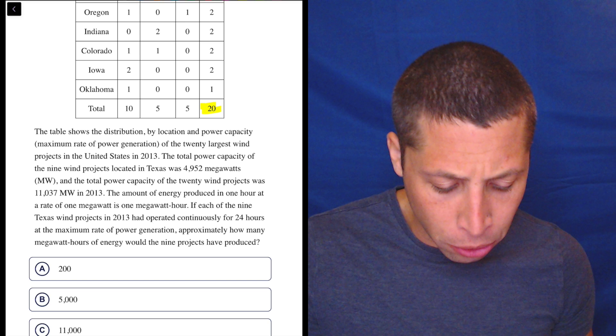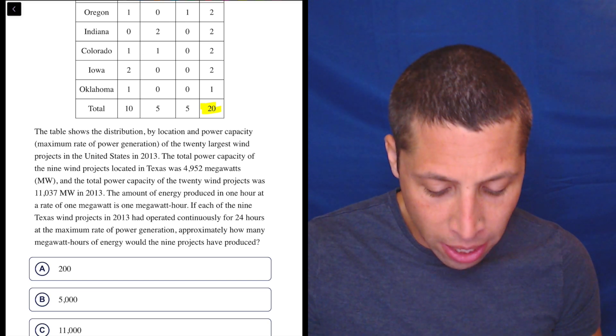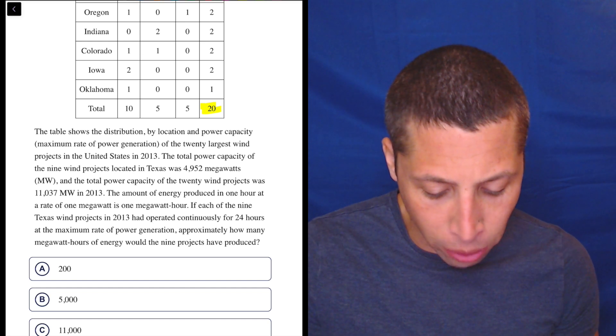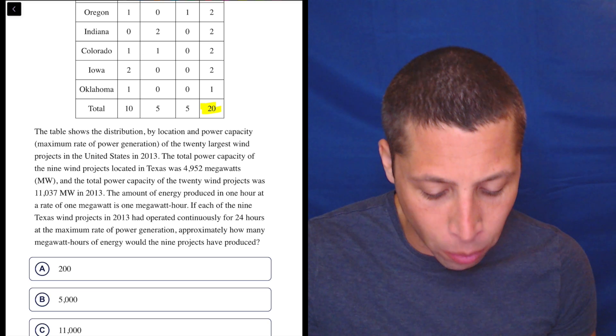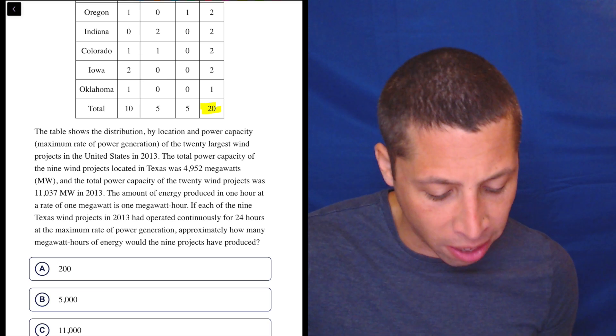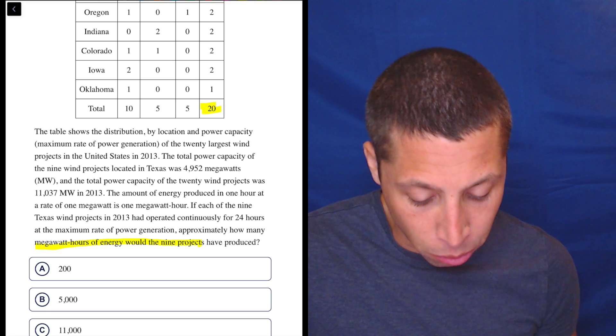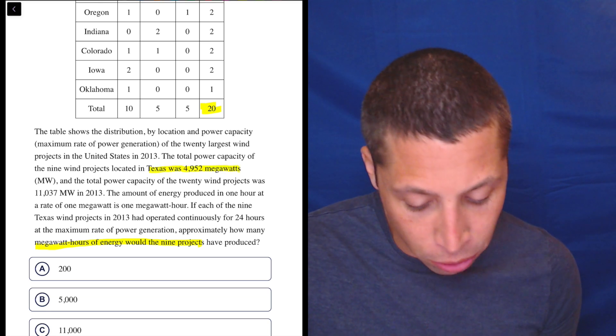The amount of energy produced in one hour at a rate of one megawatt is one megawatt hour. If each of the nine Texas wind projects in 2013 had operated continuously for 24 hours at the maximum rate of power generation, approximately how many megawatt hours of energy would the nine projects have produced? So megawatt hours for the nine projects. So we're looking at Texas. What do they say about Texas? It's 4,952 megawatts.